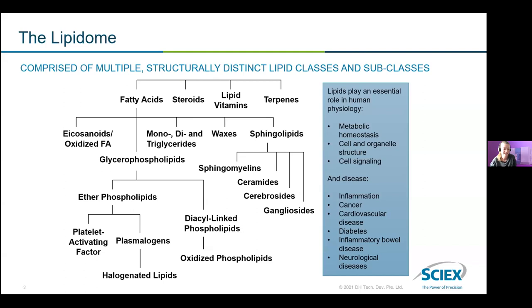For example, eicosanoids are primary mediators in inflammation and are also implicated in cancer, asthma, cardiovascular disease, inflammatory bowel disease, diabetes, and neurological diseases. As a consequence, there is increasing interest in the area of lipidomics. Thanks to the advent of electrospray ionization mass spectrometry, it has enabled us to gain an unparalleled view of the lipidome at a molecular level, and it is the primary means by which lipid mediators are studied.